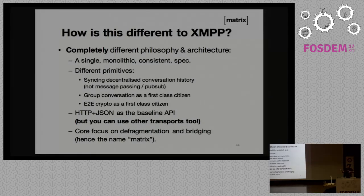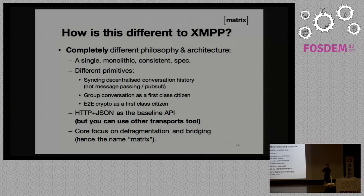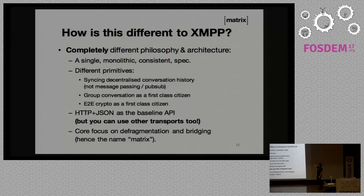On the philosophical angle, the actual spec and governance model of the project is completely different. There is one Matrix spec, it has one version, there are no XEPs, no extensions. The thing people have to implement to be compatible is today Matrix 0.2. And if you don't implement it, you're not talking Matrix. You have one big spec with all the features in it. Conversation history is the first-class citizen here — we're not passing a message between Alice and Bob, we are synchronizing Alice's chat history for a room with a server which then synchronizes it with all other users in that room.